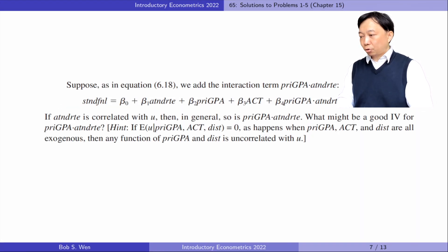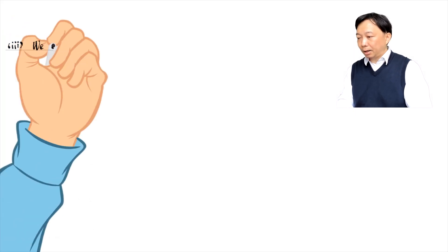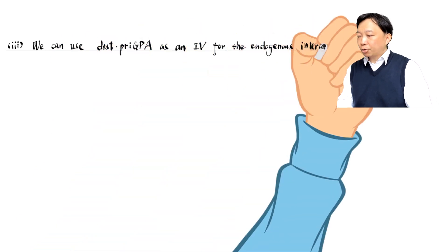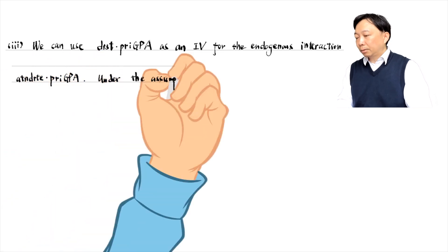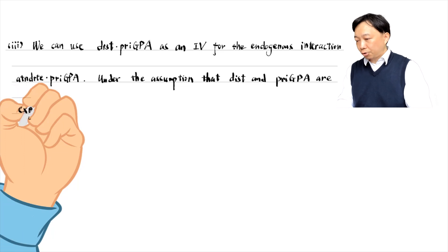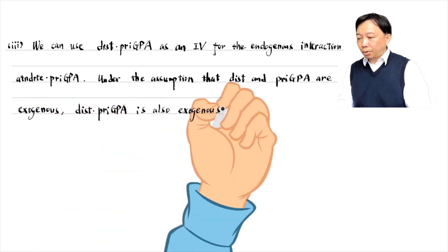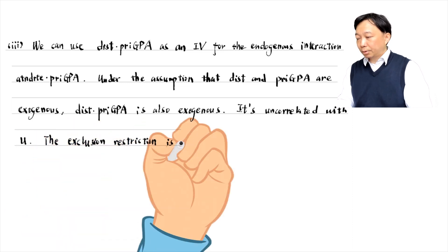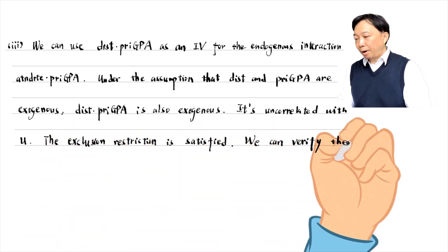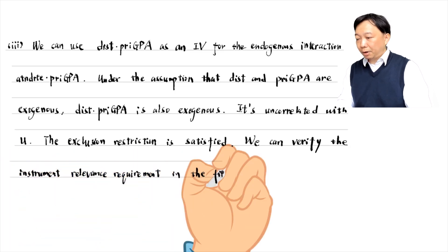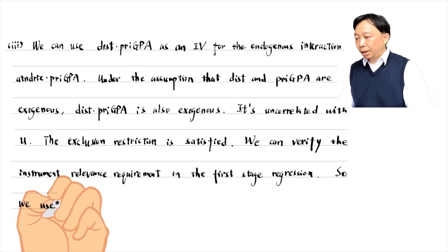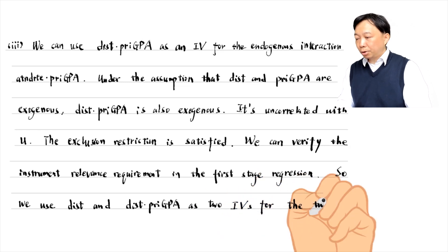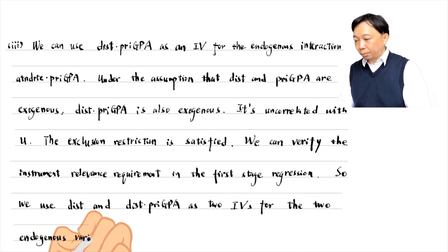In part 3, we add an interaction term to the model. What might be a good IV for the interaction term? We can use the interaction term between distance and prior GPA as an instrumental variable for the endogenous interaction. Under the assumption that distance and prior GPA are exogenous, the interaction term between them is also exogenous — it is uncorrelated with the error term mu. The exclusion restriction is satisfied, and we can verify the instrument relevance requirement in the first stage regression. So we use distance and distance times prior GPA as two instrumental variables for the two endogenous variables in the model.